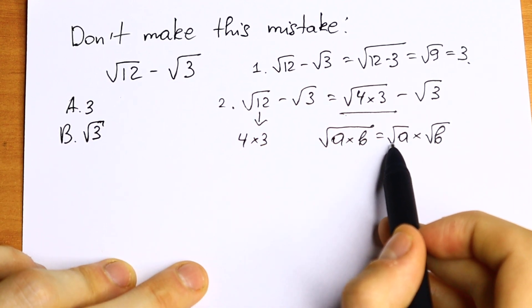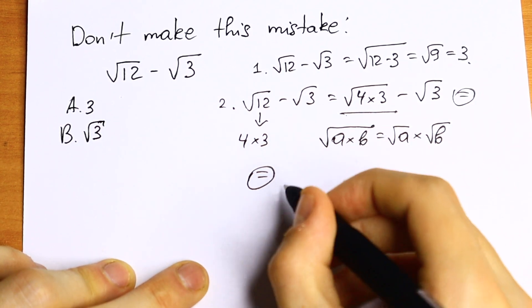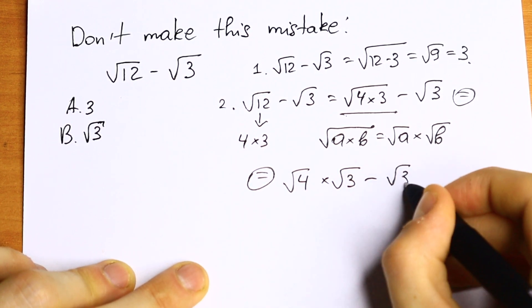We can write it as product of two squares. I write it on the bottom. We will have square root of 4 times square root of 3 minus square root of 3.